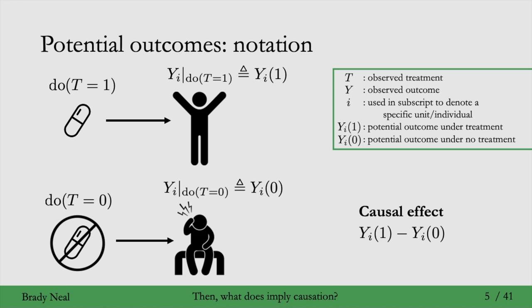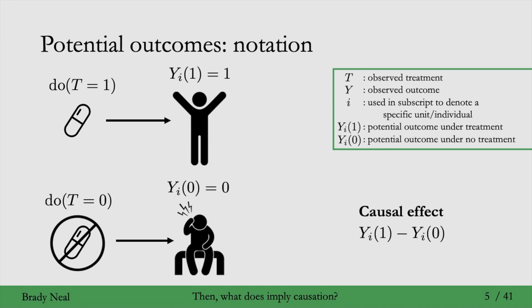We can define the causal effect as the potential outcome under treatment minus the potential outcome under no treatment. Y_i(0) equals zero means I still have the headache — that's the potential outcome I would have if I were to not take the pill. Y_i(1) equals one means I would not have a headache. So one means no headache, zero means headache. My causal effect would be one: it's just one minus zero equals one.